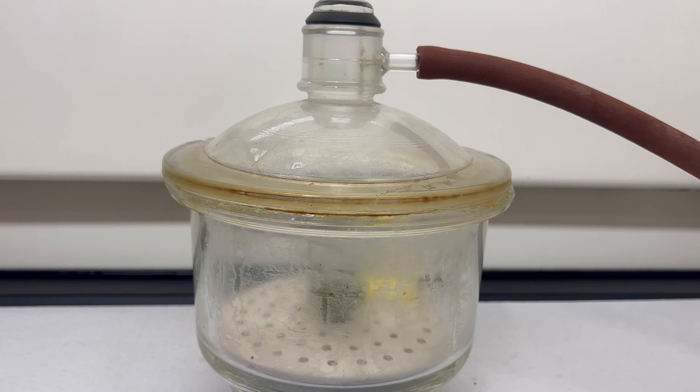Uranium halide compounds are very hygroscopic. Uranium tetrachloride being no exception. It should be kept in a desiccator or in a glove box for storage. Moisture will react with the compound forming hydrated oxychlorides, defeating the whole purpose of all these steps.